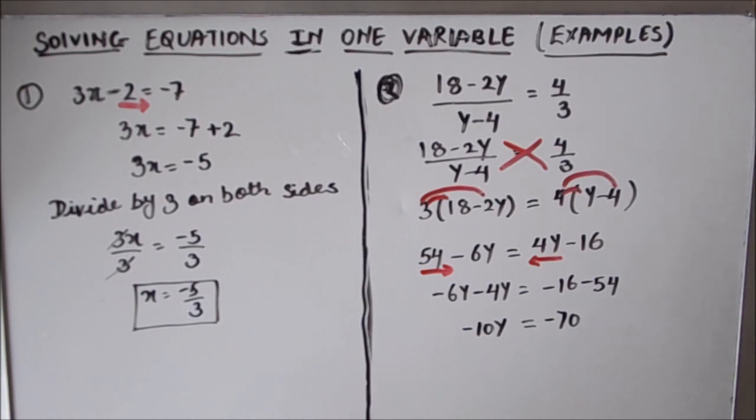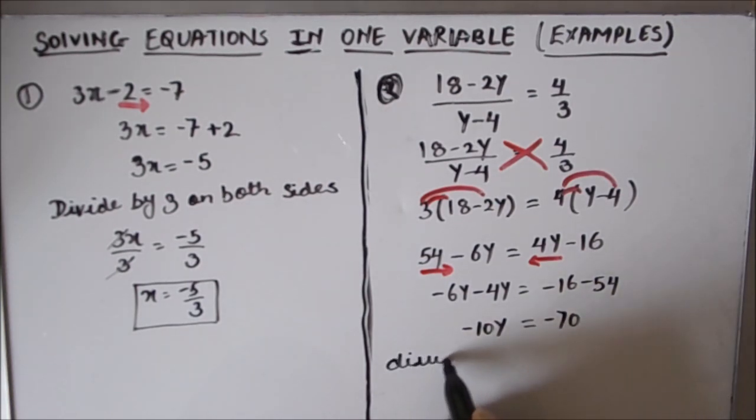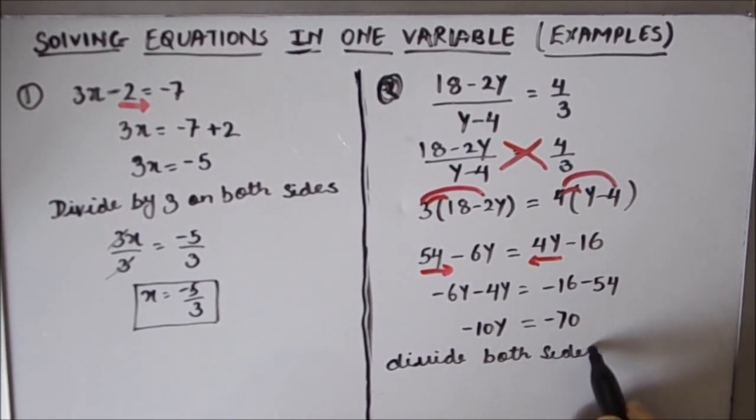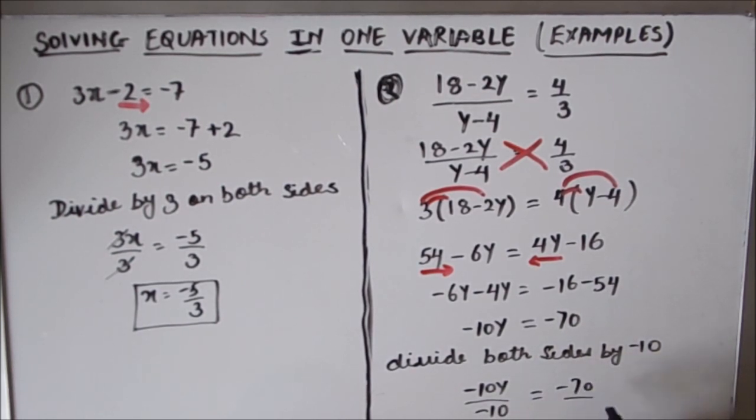To find the value of y, we need to divide both sides by minus 10. So this will be minus 10y over minus 10 equals minus 70 over minus 10. The 10 gets cancelled and minus sign gets cancelled.